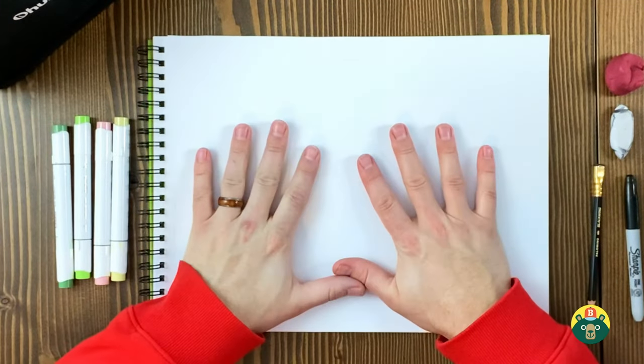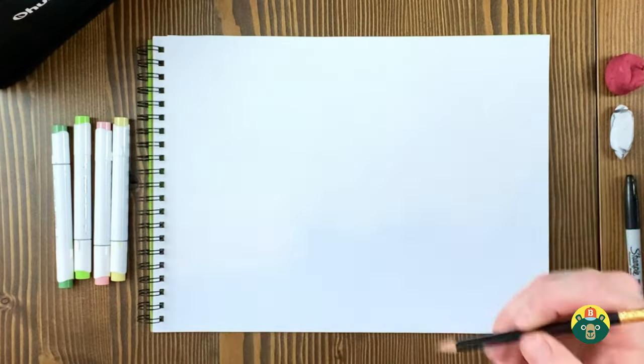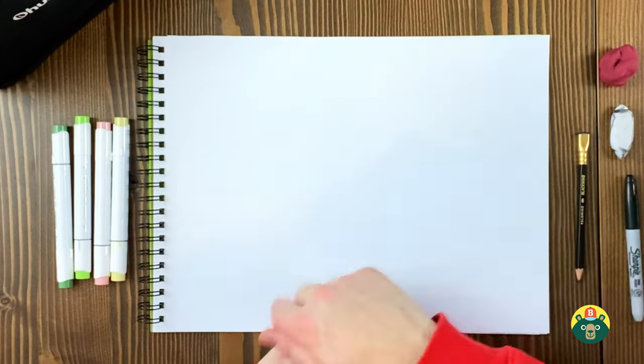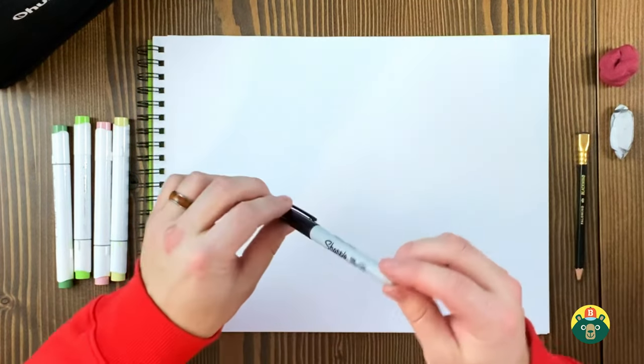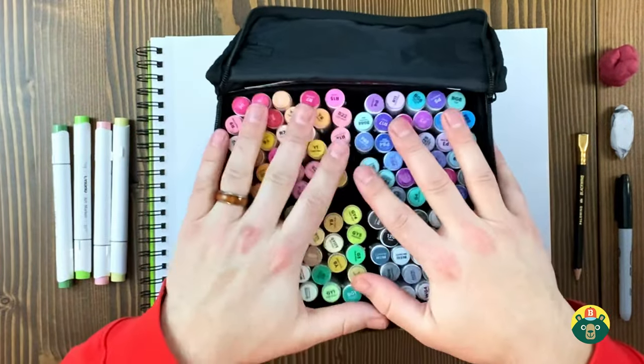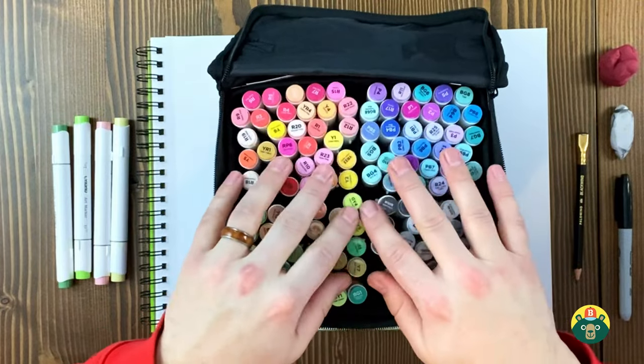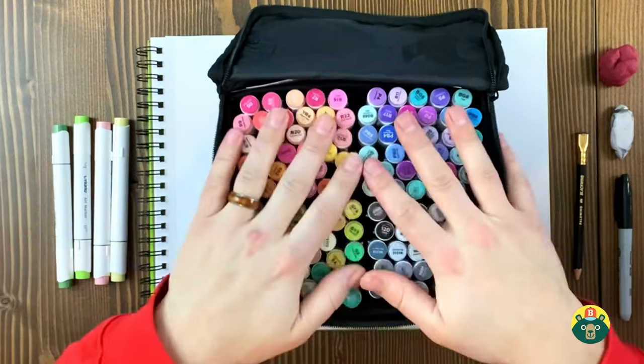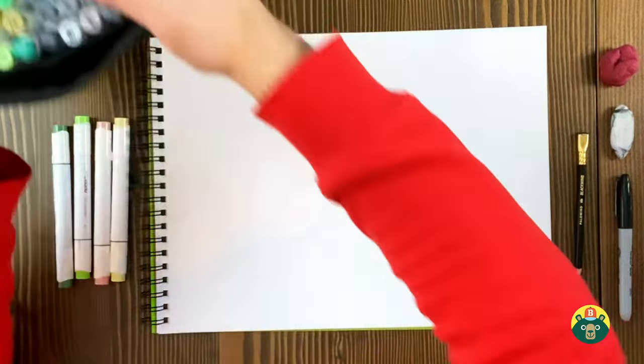But first we need to make sure we have all of our tools ready to draw. Make sure you have a nice clean sheet of paper, a pencil for sketching, some type of eraser, a dark marker or pen for the outline, and at the very end we're going to do some coloring. So the rainbow trout has lots of colors in it, hence the name rainbow trout. Get your colors ready and let's get started.